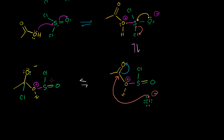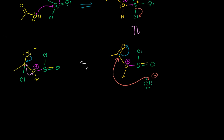The next step: the negatively charged oxygen doesn't like its charge, and the carbonyl carbon still has a partial positive charge from being bonded to electronegative atoms. So the oxygen reforms the double bond, which kicks off the leaving group. We're getting close to the punchline — we are then in equilibrium and have reformed the carbonyl double bond, now only bonded to the chlorine.